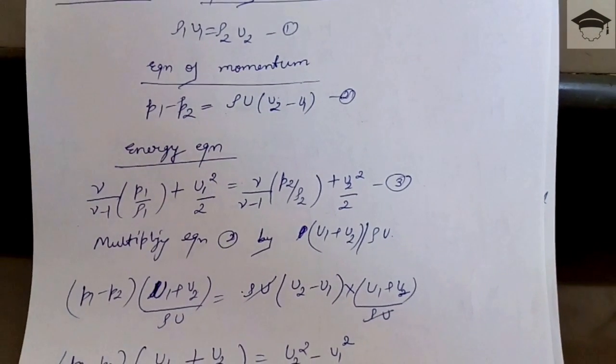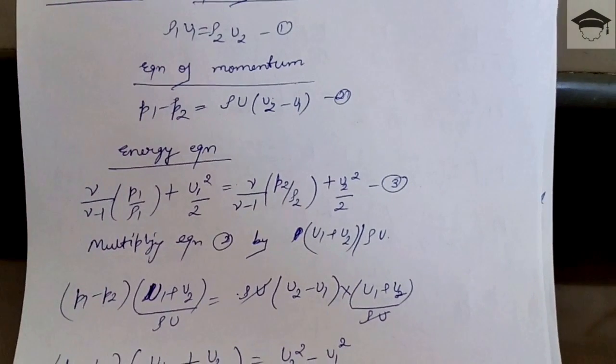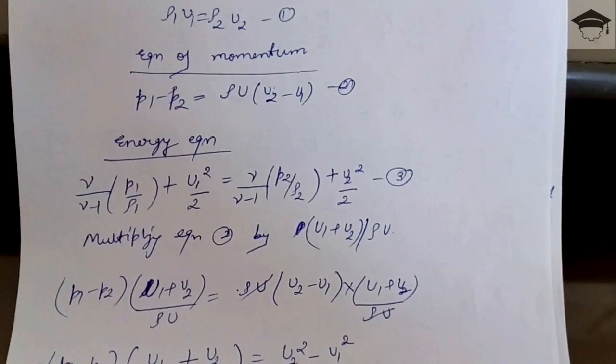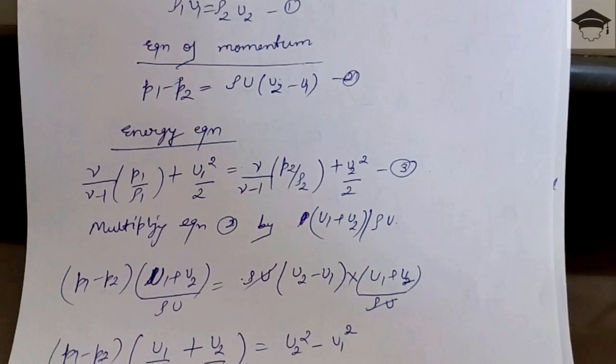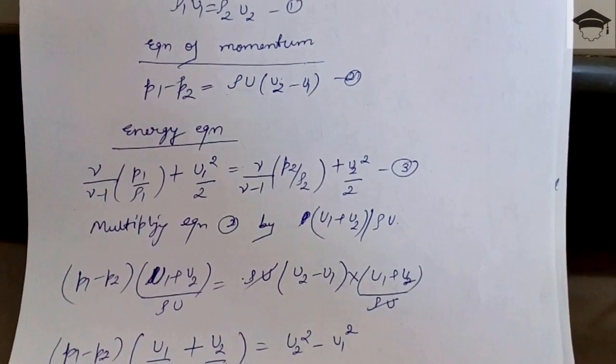Now multiplying equation 2, that is the equation of momentum, by (u1+u2)/(ρu), so (p1-p2)(u1+u2)/(ρu) = (u1+u2)/(ρu).